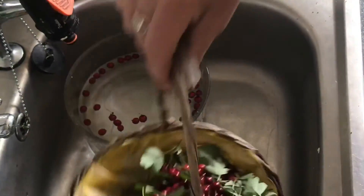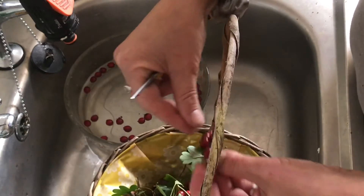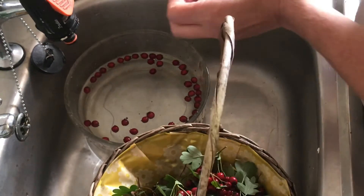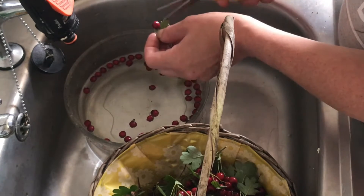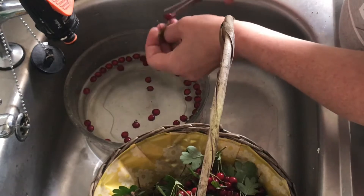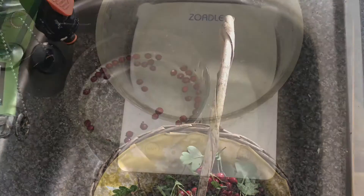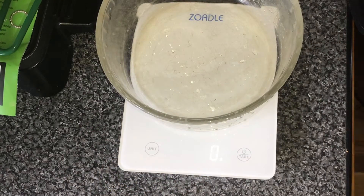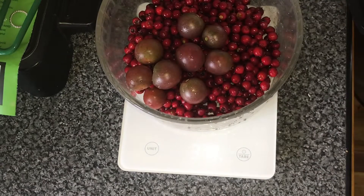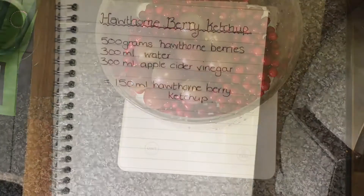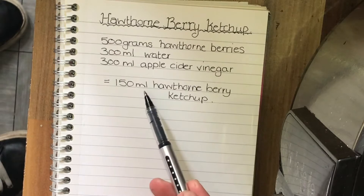I've got my big basket full of hawthorn. Although the leaves are edible in spring, they do get a bit bitter once the berries are out. So I am going to start the laborious task of removing all these berries from the stalks and giving them a good wash. Once they're all nice and clean, it's just time to weigh our berries — in this case together with our tomatoes.